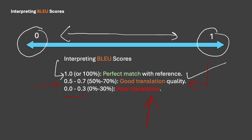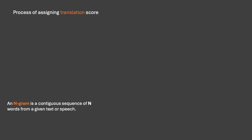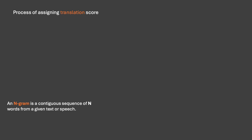Now let's understand how we assign this score. To every generated translation we assign a score ranging from 0 to 1. In the process of assigning the translation score, we compare n-grams of the generated translation to the n-grams of the provided reference. An n-gram is a fancy way of saying chunks of words — n chunks of words. By definition, an n-gram is a continuous sequence of n words from a given text or speech.